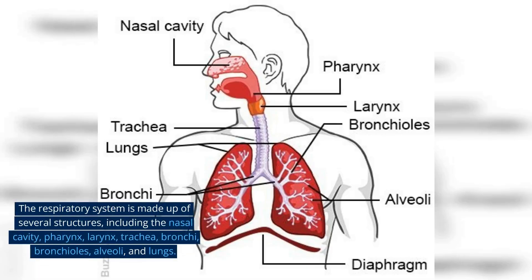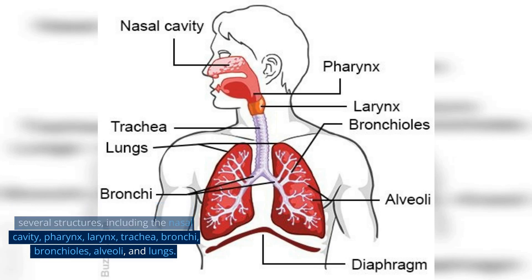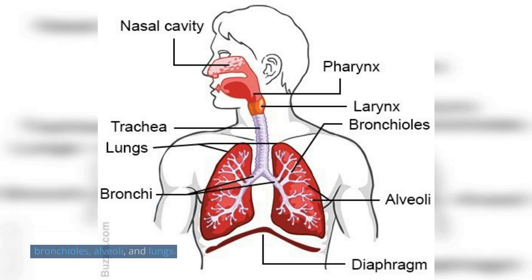The respiratory system is made up of several structures, including the nasal cavity, pharynx, larynx, trachea, bronchi, bronchioles, alveoli, and lungs.